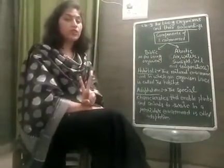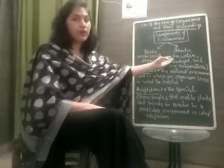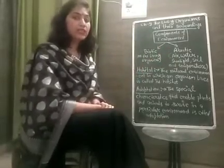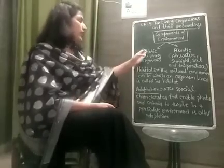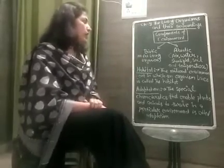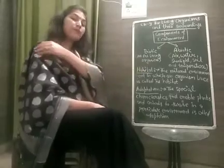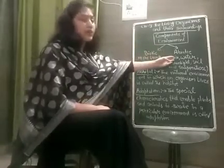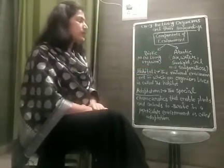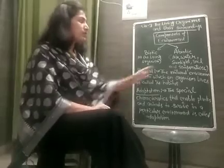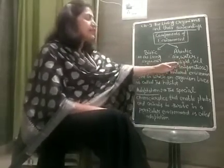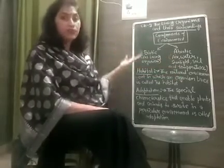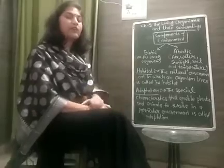There are two main components of environment: biotic components and abiotic components. These two components help an organism to survive successfully in its particular environment. Biotic components include all the living organisms — for example, plants and animals. Abiotic components include all the non-living things, for example air, water, sunlight, soil, and temperature. Both biotic as well as abiotic components are necessary for an organism to survive in a particular environment.